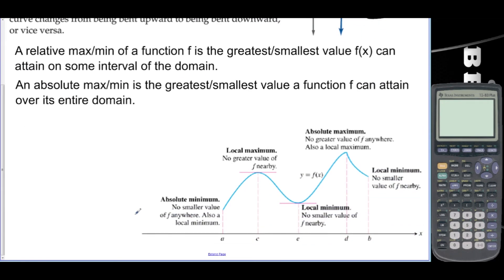Here we have an absolute minimum — it's the lowest point overall, and it's also a local minimum. Here we have a local maximum. Here's just a local minimum. Here is the absolute maximum, and it's a local maximum also. And here we have just a local minimum.